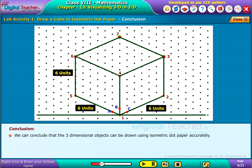We can conclude that 3-dimensional objects can be drawn using isometric dot paper accurately.